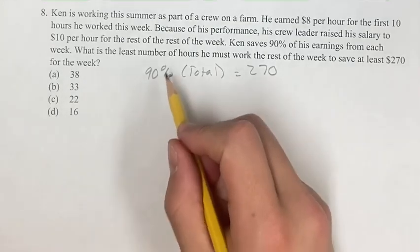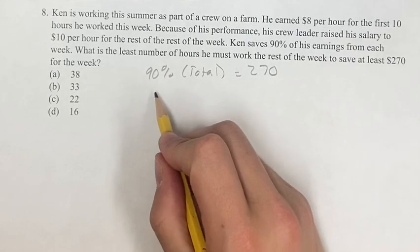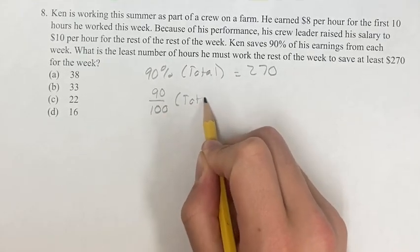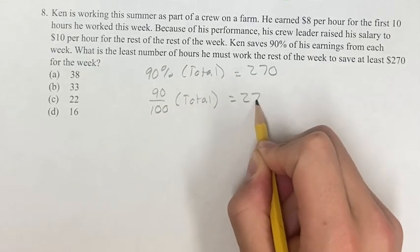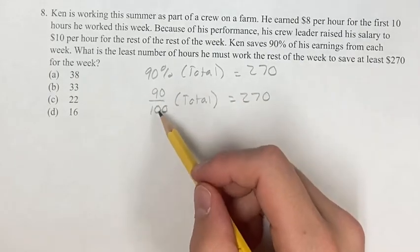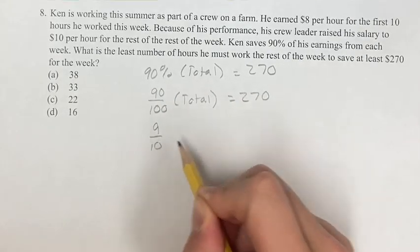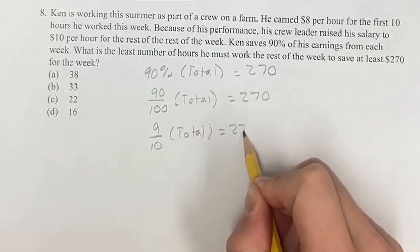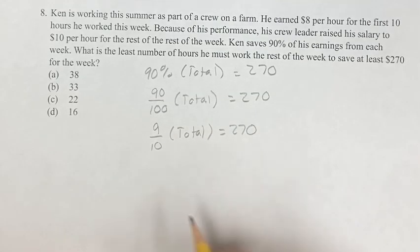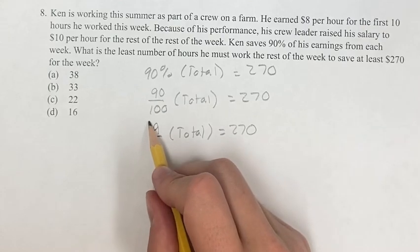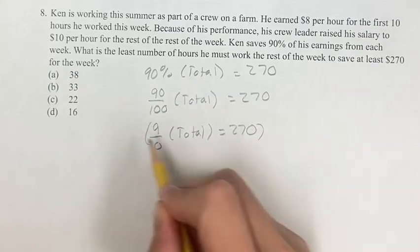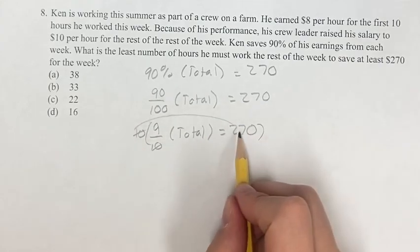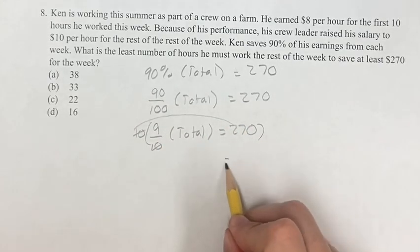What is 90%? Well, a percentage is just a number out of 100. So 90 over 100 times the total is equal to $270. 90 over 100 is the same as 9 over 10, times the total, is equal to $270. And then if we want to multiply both sides by 10, then these cancel, and we multiply over here — so 10 times $270 is $2,700.